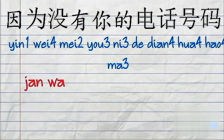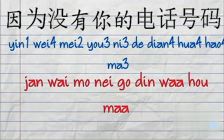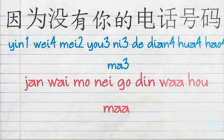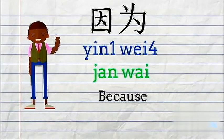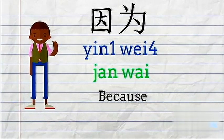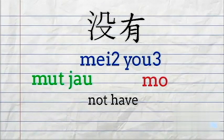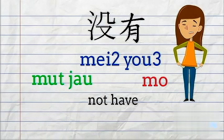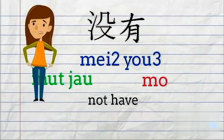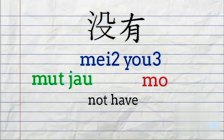因为没有你的电话号码. Because it doesn't have your phone number. 因为 means 'because'. 没有 basically means 'don't have'. So if someone asks you 你有没有? You say 我没有. 有 also means 'to have', so if you have it, you say 我有.